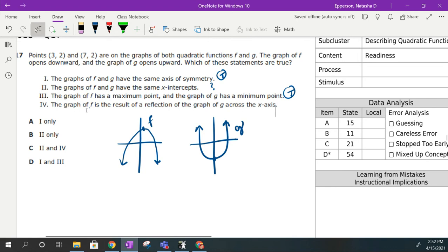The graph of f is the result of a reflection of the graph of g across the x-axis. That is incorrect. g will be a reflection off of f. g would be our transformed function. So that is definitely false. Looking at our answer choices, one and three. So d has to be our answer choice. There's none of them that have four involved except for c, which has two as an answer choice and two is definitely not true.